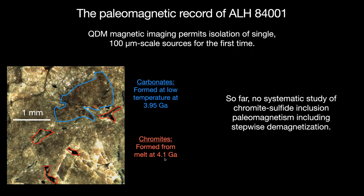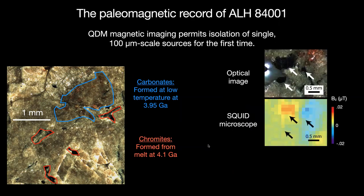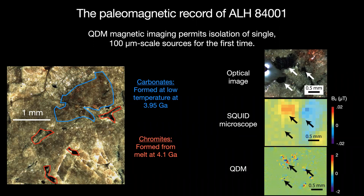What we're trying to do is obtain a paleomagnetic record from these chromite-pyrrhotite assemblages that will give us a story of the magnetic environment all the way back to 4.1 billion years ago. The reason it hasn't been done already is that these inclusions are not separated by large distances — maybe a millimeter apart in many cases. Other techniques, including a microscope with about 200 micrometer resolution, can barely distinguish some of the larger sources. Using the QDM, we can resolve the individual sources and pick the ones that have a more coherent signal. The QDM is less sensitive than the SQUID microscope, but the chromite-pyrrhotite assemblages are quite strong, so that's not a problem.